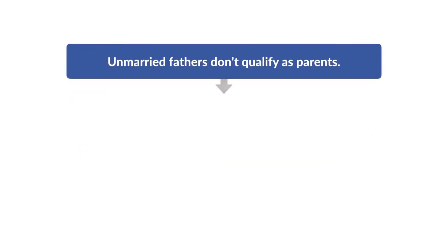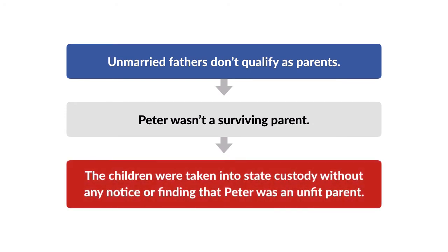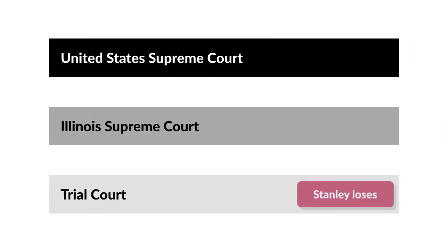Therefore, Peter wasn't considered to be a surviving parent, and his children were taken into state custody without any notice or finding that Peter was an unfit parent. Pursuant to a state dependency hearing, Peter's children were declared wards of the state and placed with court-appointed guardians. Peter appealed, arguing that he'd been denied his rights to constitutional due process and equal protection.